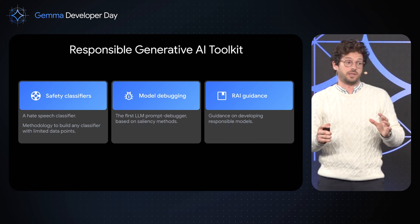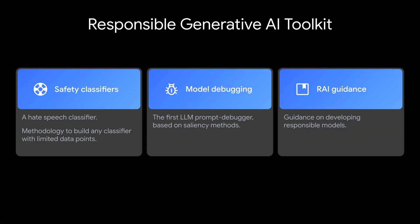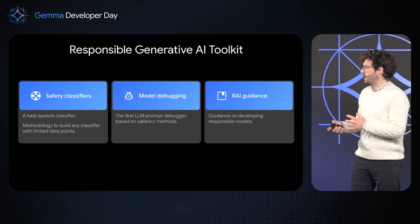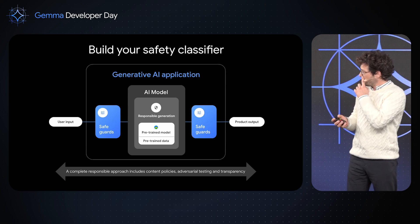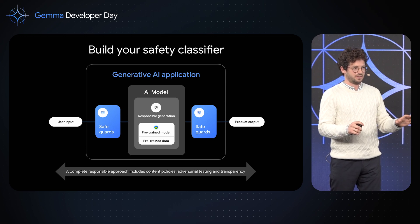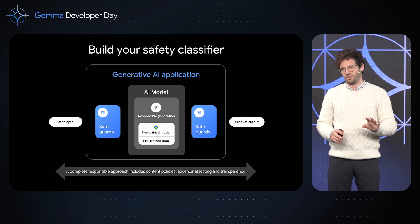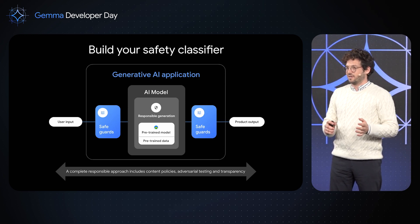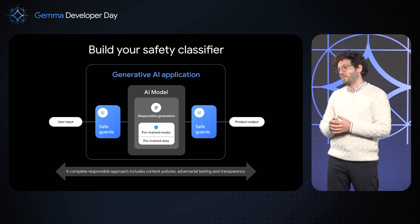The toolkit includes three things: a novel methodology to build safety classifiers with a very small number of data points; a model debugging tool to investigate Gemma results and improve them if there's an issue; and guidance, best practices, and lessons learned at Google for each step of model development. For safety, you can do all your best efforts to tune a model to be safe, but a bad outcome is unfortunately always possible. Classifiers are a good answer to that — they help you filter out those bad examples.